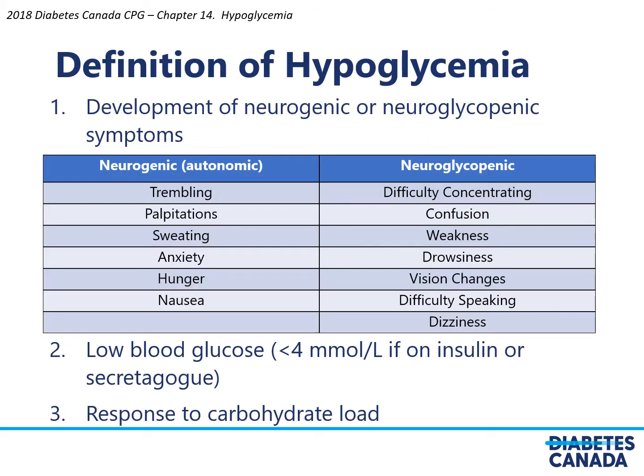The definition of hypoglycemia is as follows. First, there is development of neurogenic or neuroglycopenic symptoms. Neurogenic symptoms are the same kind of symptoms that one experiences when nervous or scared, and these include trembling, palpitations, sweating, anxiety, hunger, or nausea.